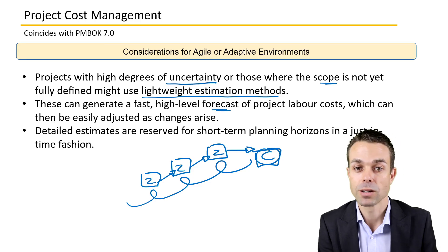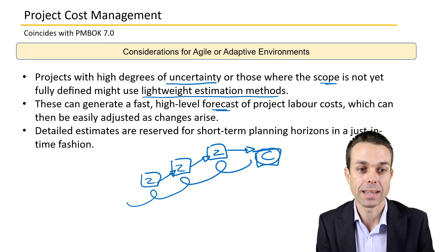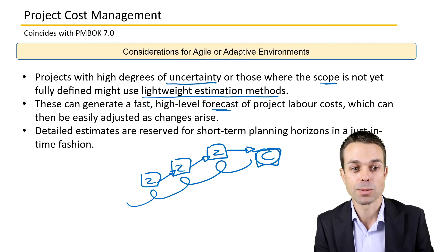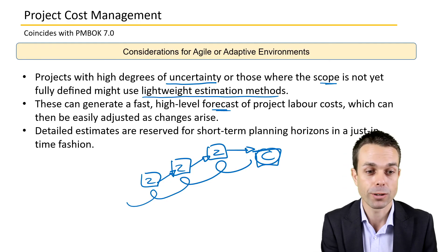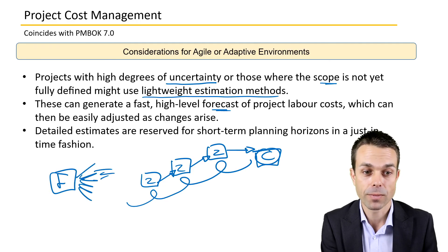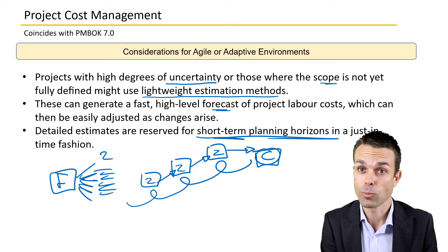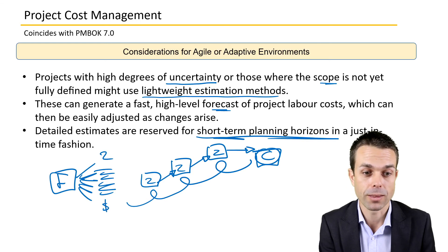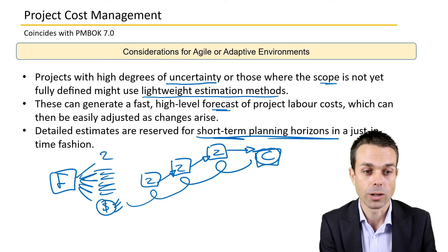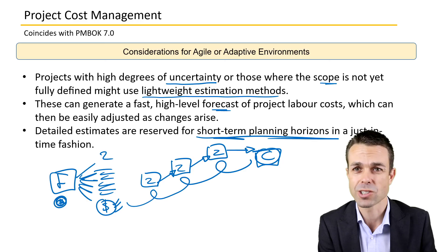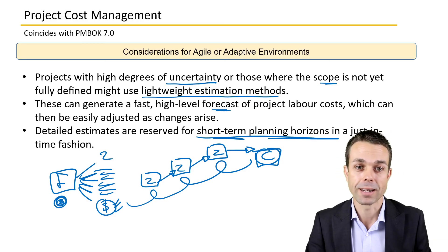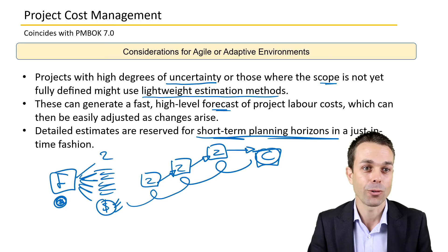This approach can generate a fast, high-level forecast of project labor costs which can be easily adjusted over time. Detailed estimates are reserved for short-term planning — just as we plan our activities in detail just before each iteration, we can do the same for cost. So for the near term we have a really good idea of cost, while further out it's just a high-level view. That's the way you work in an agile environment, and that is the overview for project cost management.